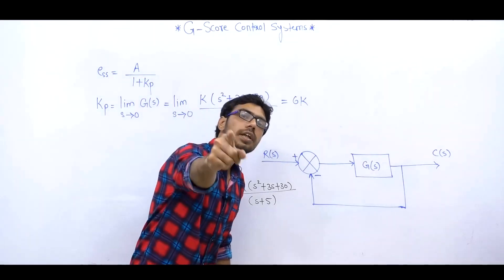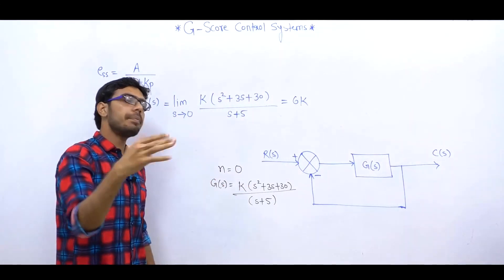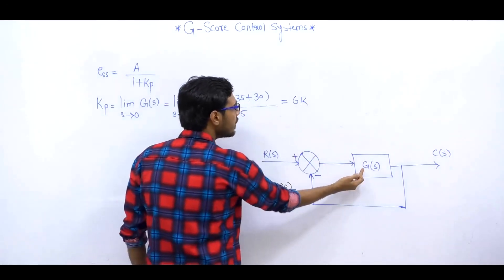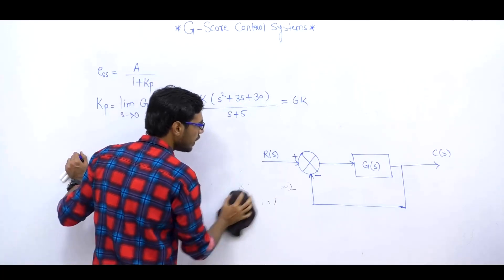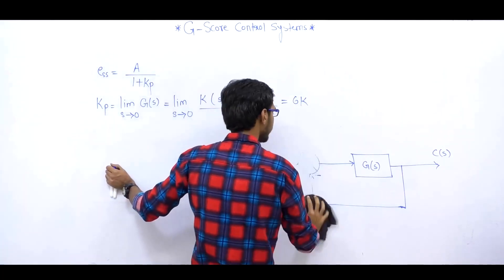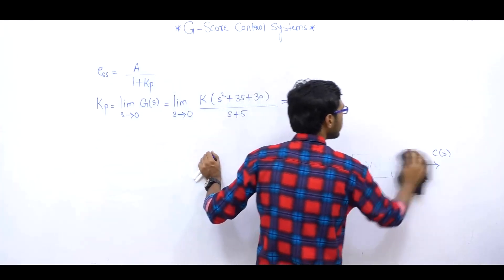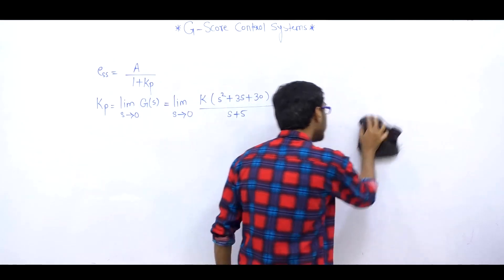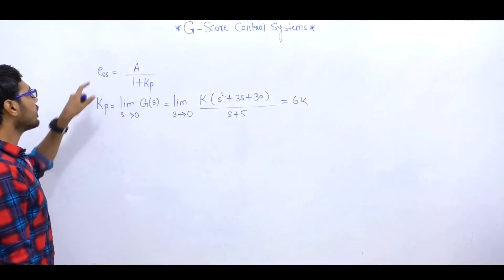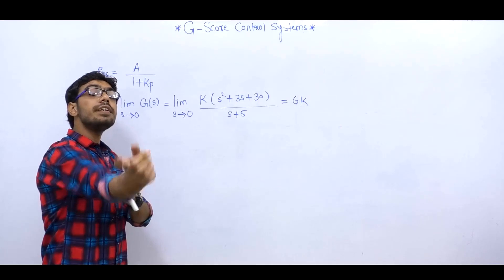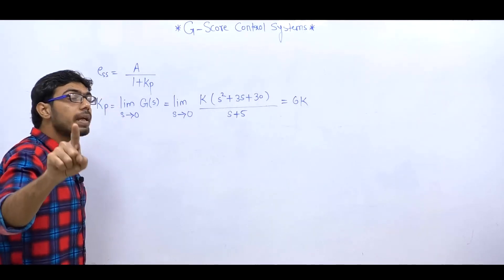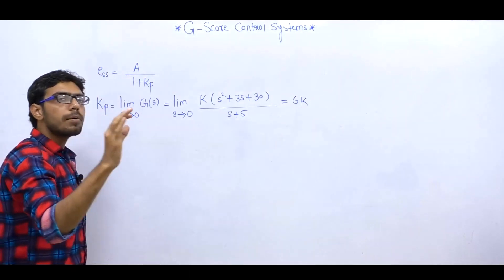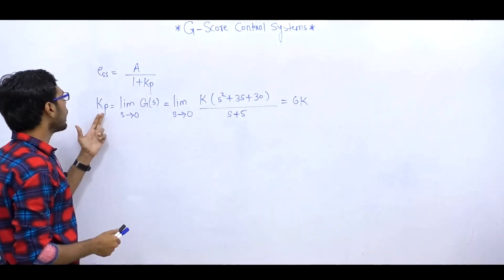TYPE ZERO SYSTEM determine करने के लिए सबसे पहले SYSTEM UNITY FEEDBACK में होना चाहिए। यहाँ पर already UNITY FEEDBACK में दिया गया है। उसके बाद G(S) के POLES ORIGIN पे कितने हैं — वही SYSTEM का TYPE बताता है। और यह वाली formula सिर्फ तब applicable है जब INPUT STEP FUNCTION of amplitude A हो — RAMP और PARABOLA के लिए formula different होता है।